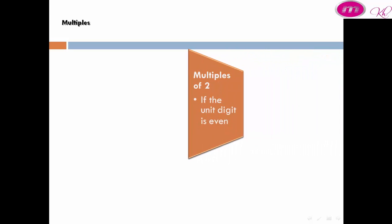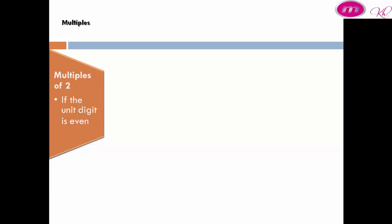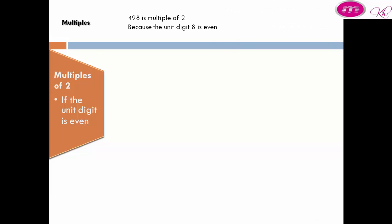How to recognize a multiple of 2: a number is a multiple of 2 if the unit digit is even. For example, 498 is a multiple of 2 because the unit digit 8 is even.